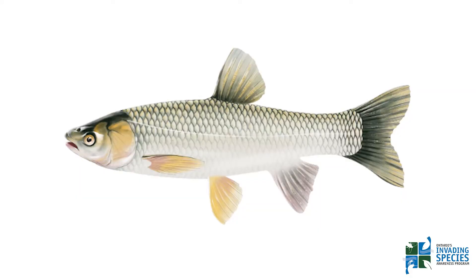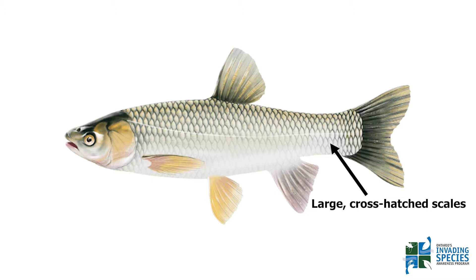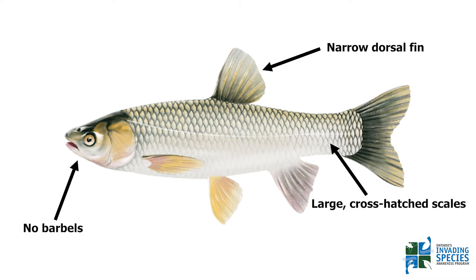Grass carp have large scales with dark borders that appear crosshatched across the body. They range in colour from dark grey to olive brown with a slight golden shine that blends to white towards the belly. Unlike the common carp we have here in Ontario, the grass carp's dorsal fin is narrow and they are lacking the distinct barbels or whiskers on their lips.